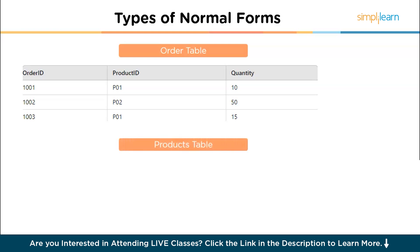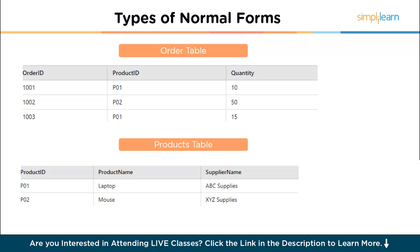In the order table, quantity is fully dependent on both order ID and product ID. In the product table, product name and supplier name are dependent only on the product ID. This ensures that each non-key attribute is fully dependent on the primary key, bringing the tables into 2NF.